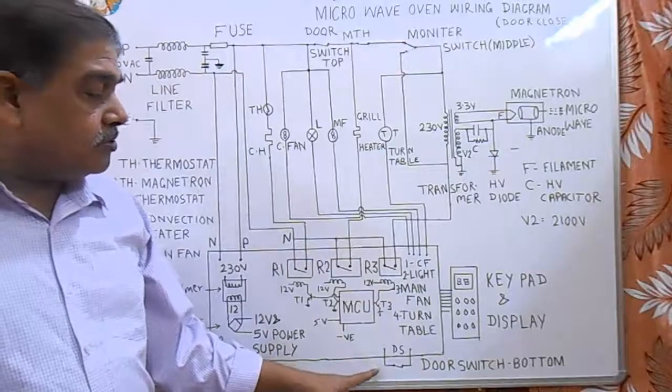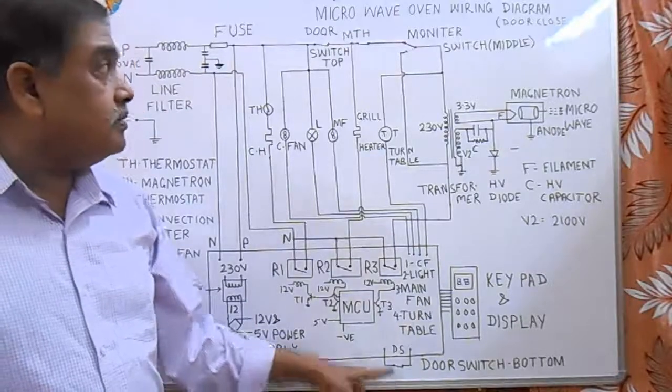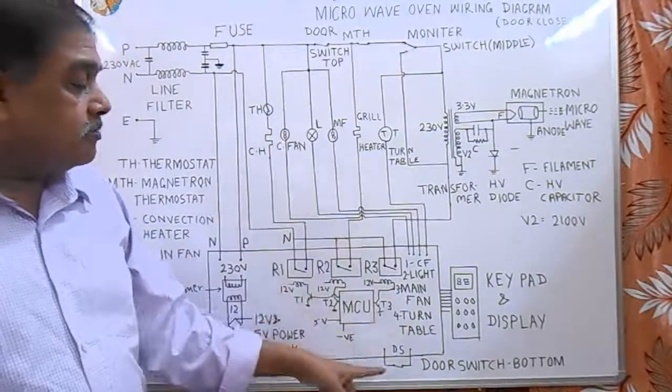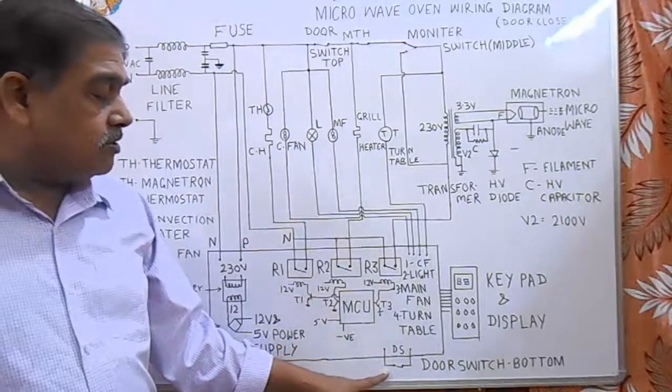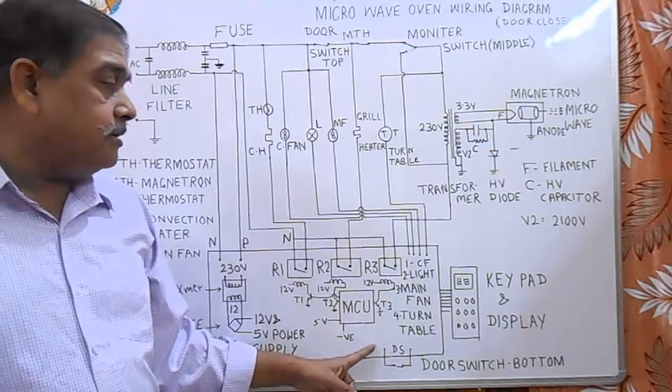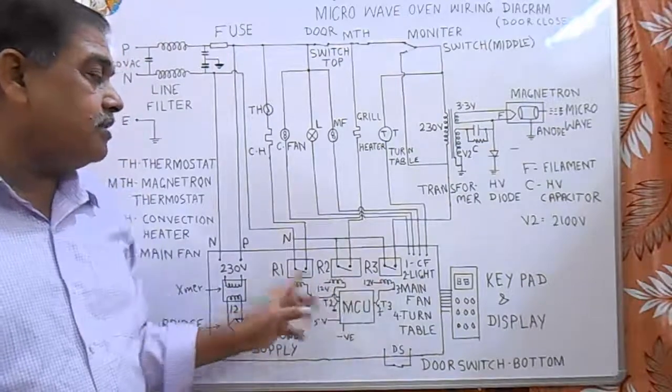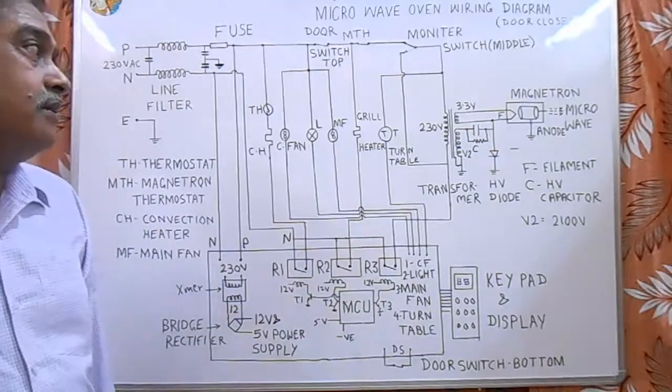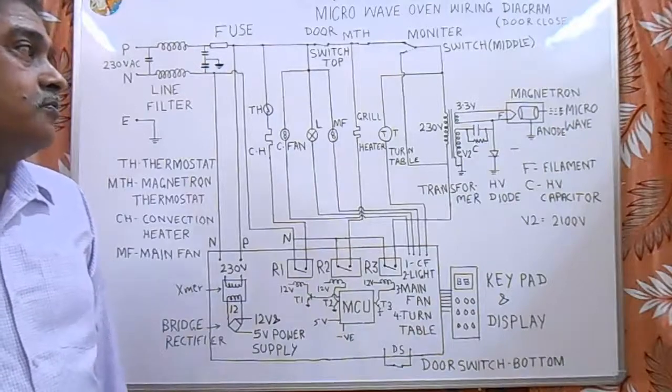And one more door switch is placed here. Whenever we open the door, the third door switch opens the connection to the PCB, so it switches off all the relays. This ensures there is no microwave or any heating when the door is open.